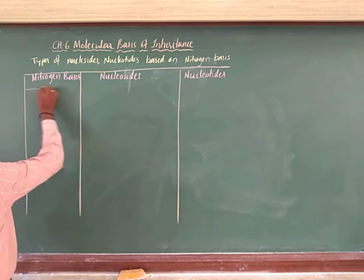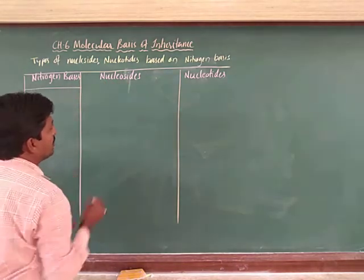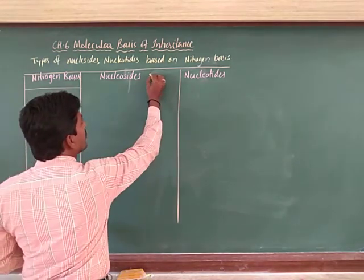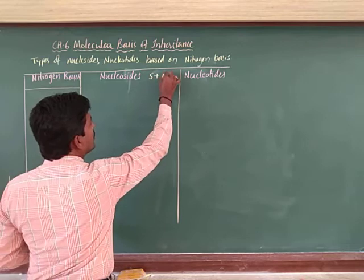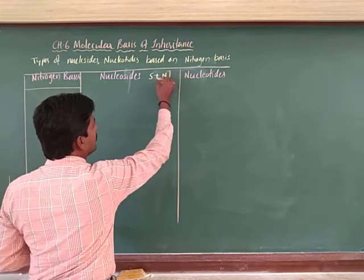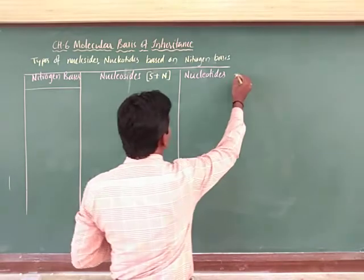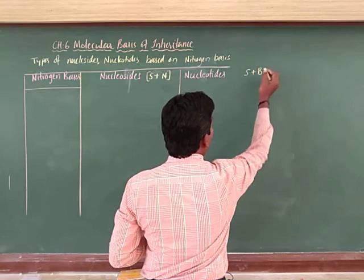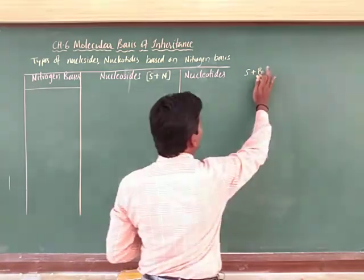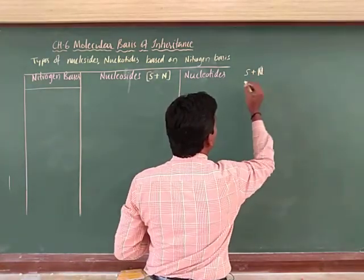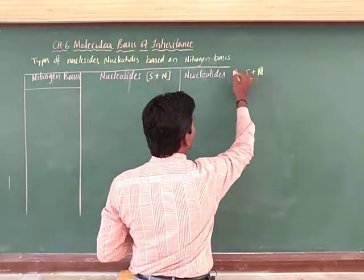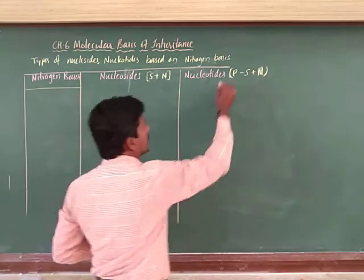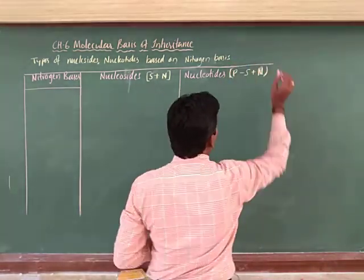Nitrogen bases are of different types. A nucleoside means pentose sugar plus nitrogen base. A nucleotide means pentose sugar plus nitrogen base plus phosphate.